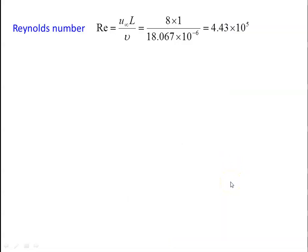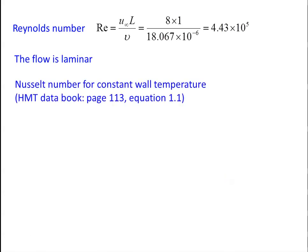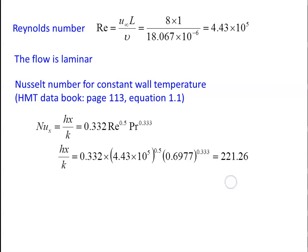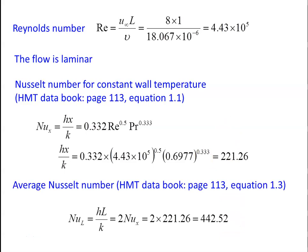Nusselt equation for constant wall temperature, page 113, equation 1.1: Nu = 0.332 × Re⁰·⁵ × Pr⁰·³³³. Substituting: hx/k = 0.332 × (4.43 × 10⁵)⁰·⁵ × (0.6977)⁰·³³³ = 221.26. Average Nusselt number = 2 × 221.26 = 442.52.